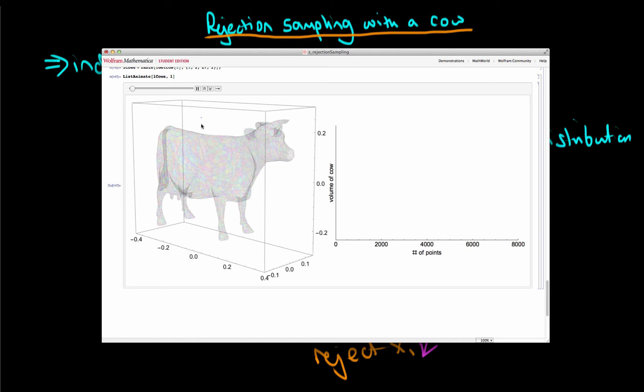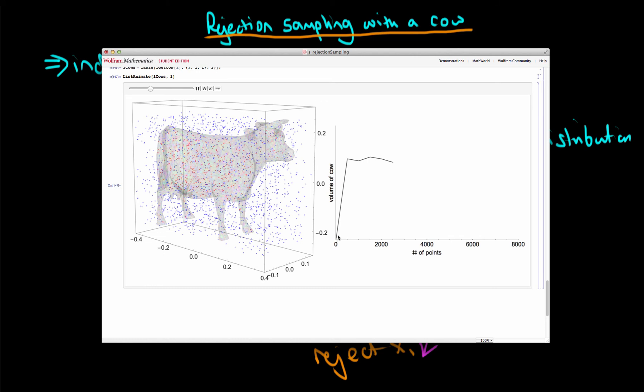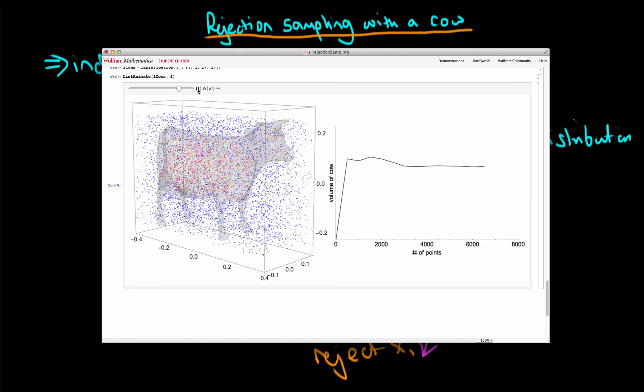So starting off this simulation now, we can see that we are starting off with a relatively poor estimate of the volume of the cow because I think that my first point that I generated lay outside of the cow's boundaries.